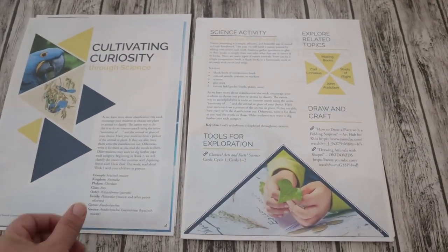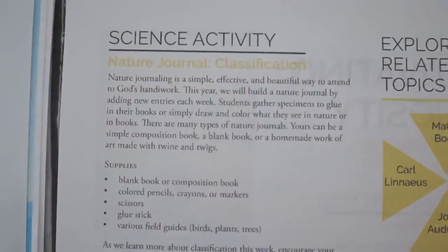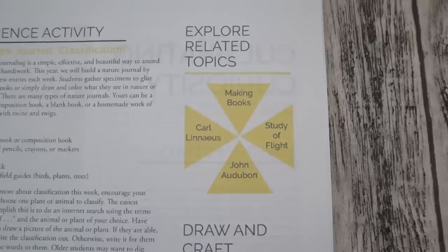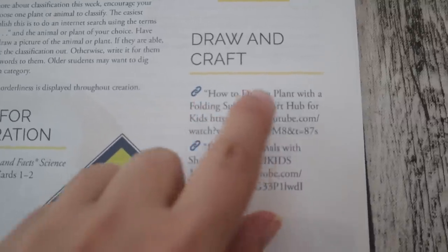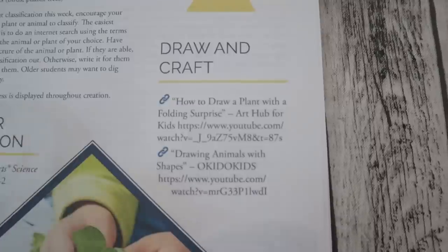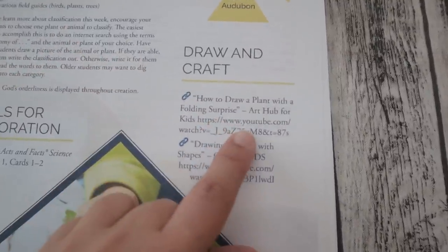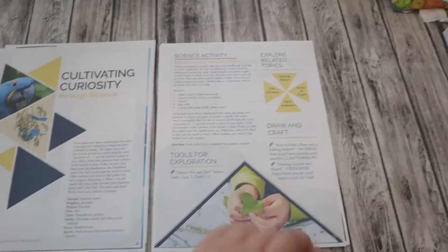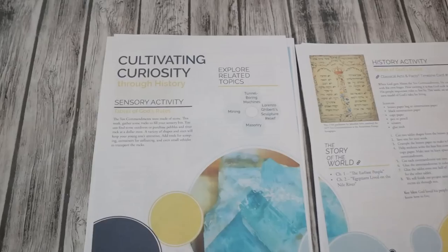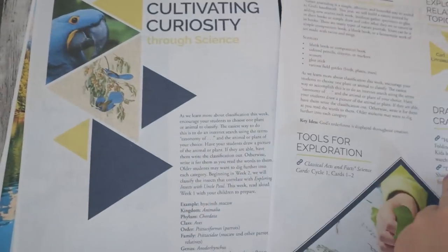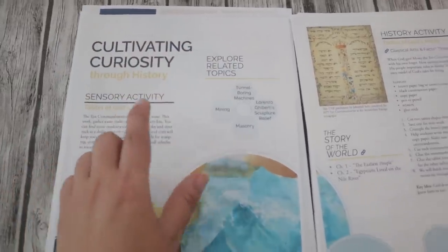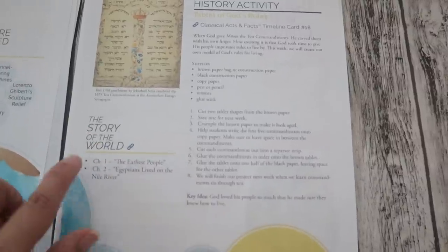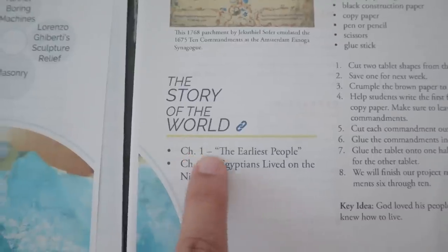There are articles included like 'Starting Slow' by Clara McCallin. Under 'Cultivating Curiosity Through Science,' there's an actual science activity, references to the science fact cards, related topics to explore, and draw-and-craft recommendations like Art for Kids Hub — how to draw a plant, a folding surprise, and drawing animals with shapes. Since it's electronic, you can just click the links in the document.